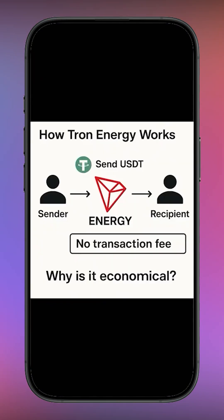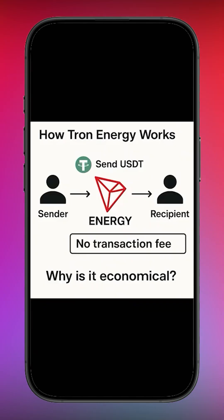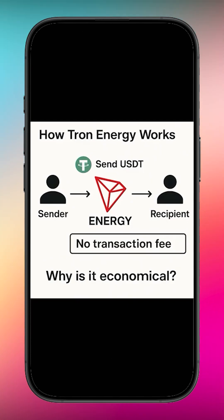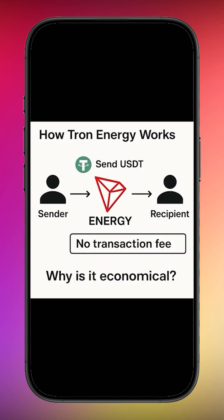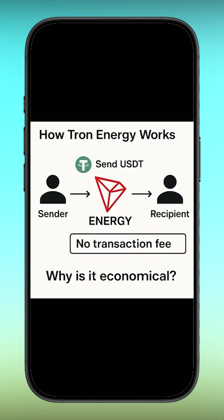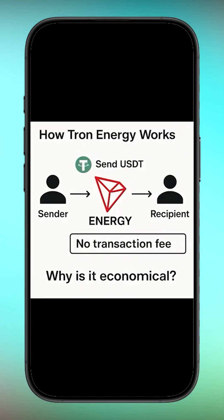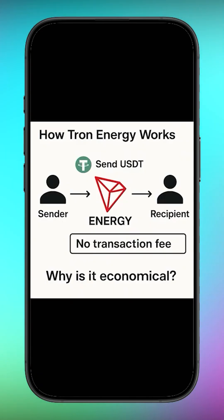Now let's quickly break down how this actually works and why it saves you money. On the Tron network, every time you send USDT, the network requires resources — mainly energy and bandwidth. If your wallet doesn't have enough energy, Tron burns your TRX to pay for the transaction. Most users don't even notice this — they just lose TRX on every transfer. But there is a smarter way: instead of burning TRX over and over again, you can rent energy once and use it for multiple transactions.